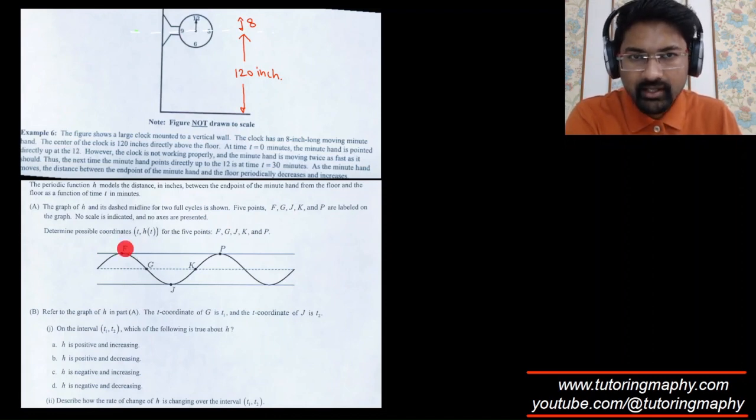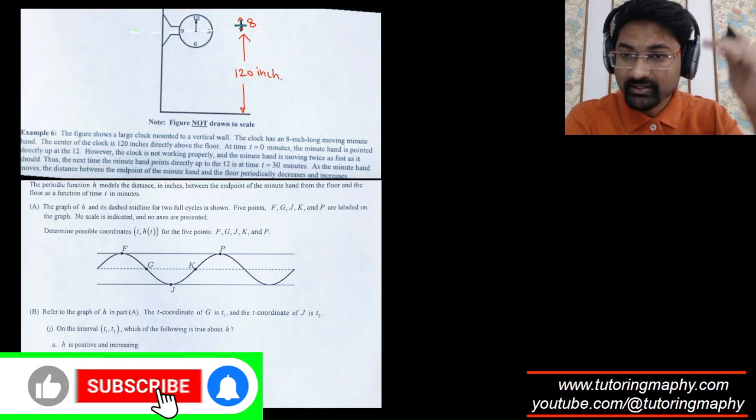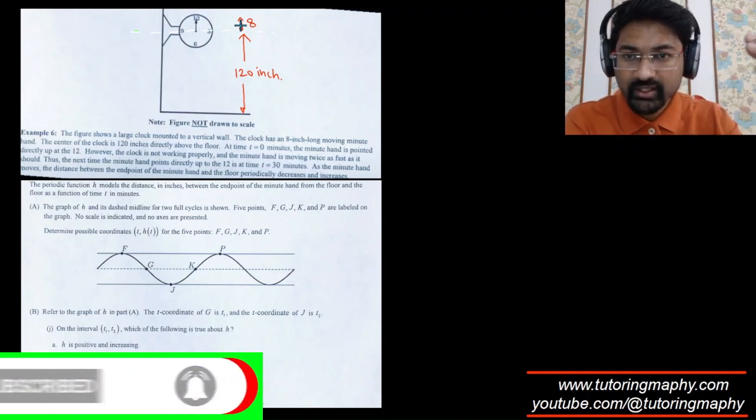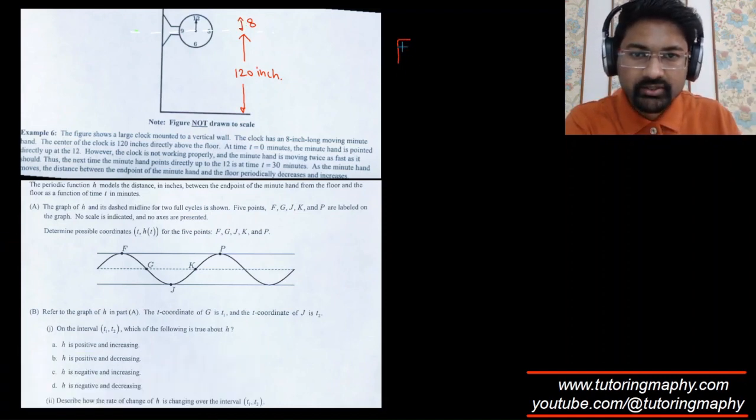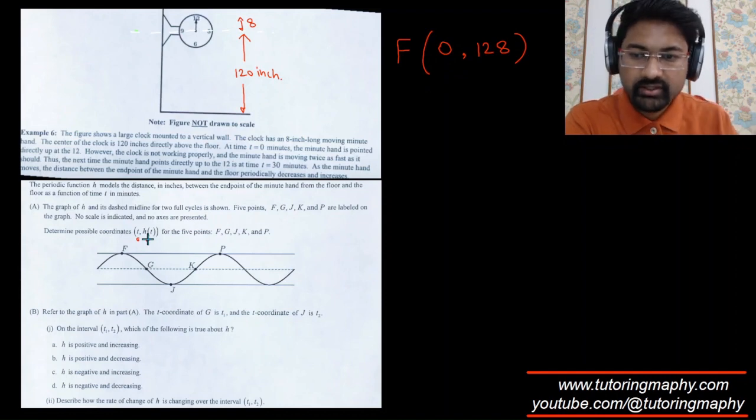Obviously F is the highest point, and the highest height is 120 plus 8, which is 128. That is the maximum height from the floor. I know that at t equal to 0, the height is 128 inches. So the coordinates are t equals 0 and h of t equals 128.